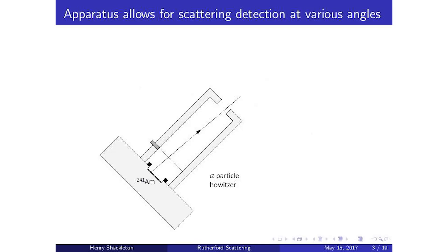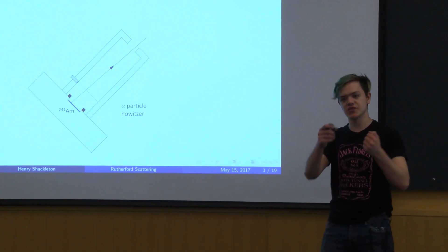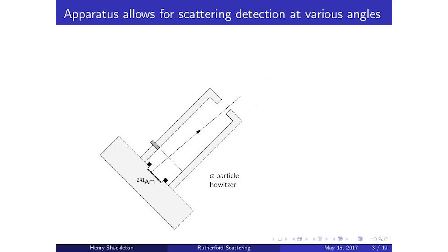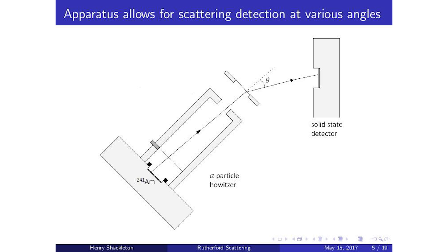Now let's talk about the apparatus. The first part is an alpha particle howitzer, which contains an americium-241 source that emits alpha particles — two protons and two neutrons — at approximately constant energy. These alpha particles shoot out of the howitzer in a concentrated beam, hit a gold foil where scattering occurs, and scatter off at an angle theta, which is then detected by our solid-state detector. This detector registers the count and the energy of the incoming particle and sends it to an MCA to be analyzed.